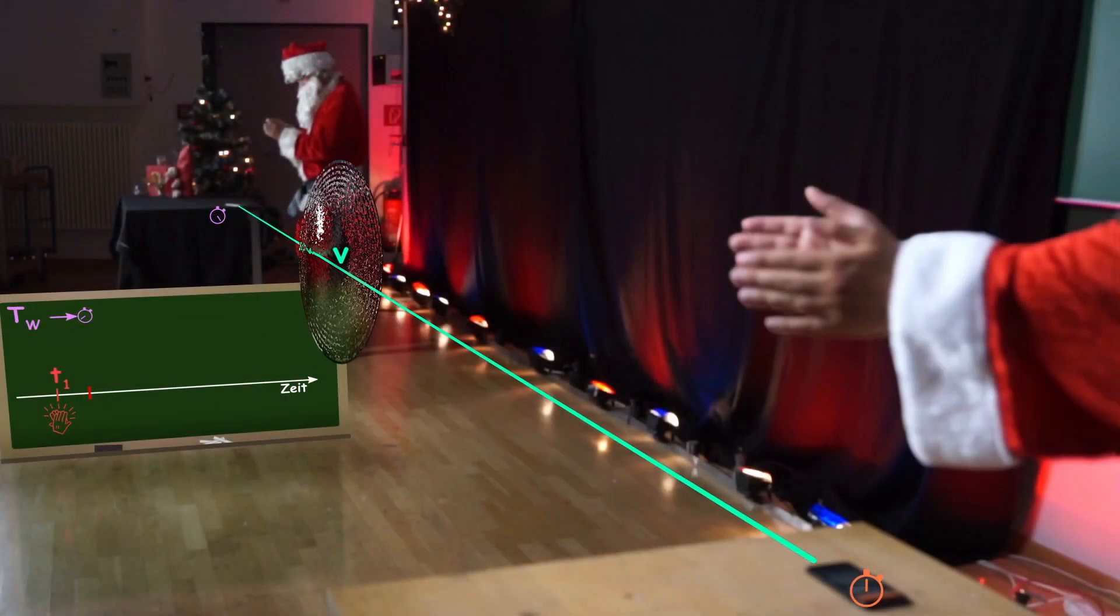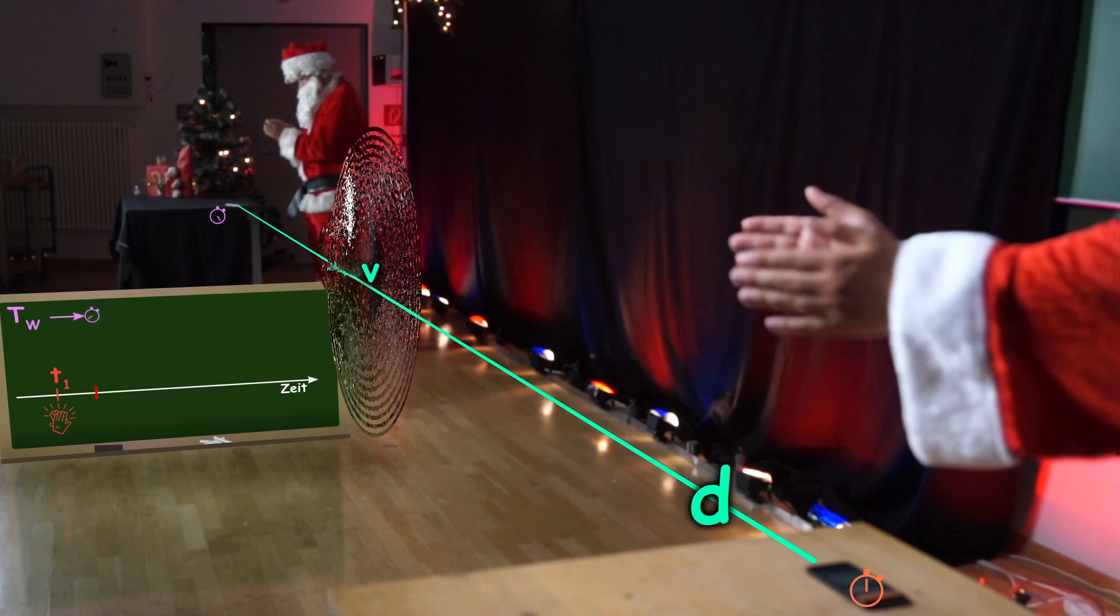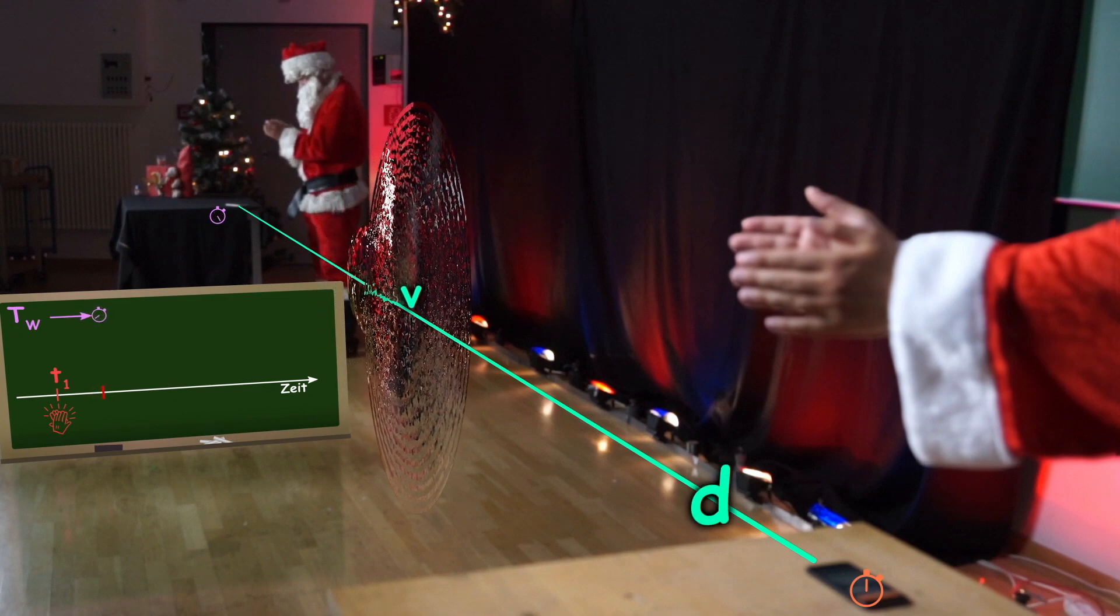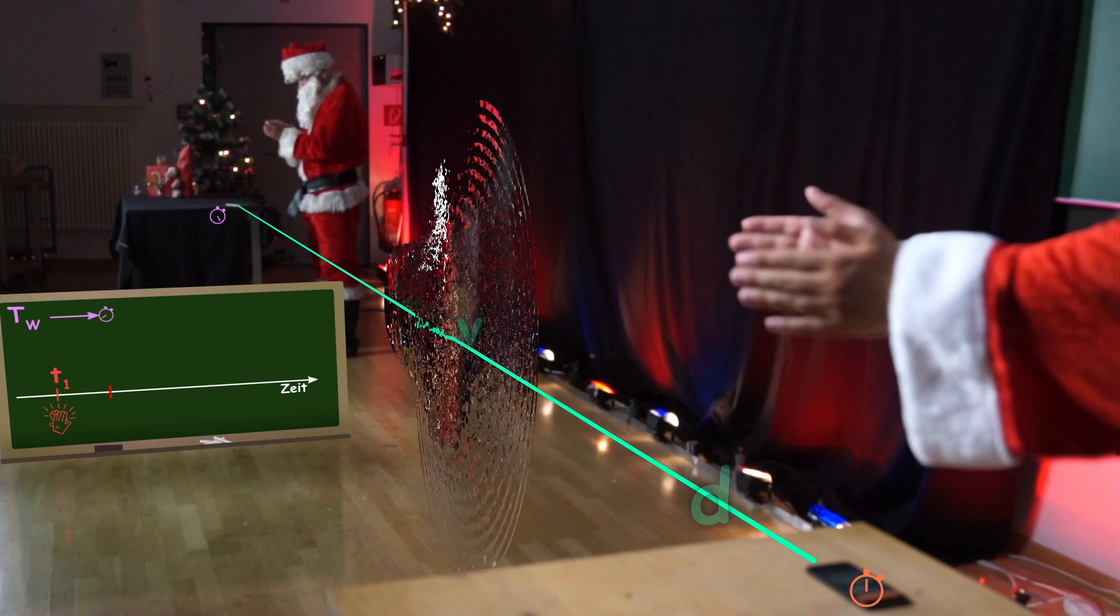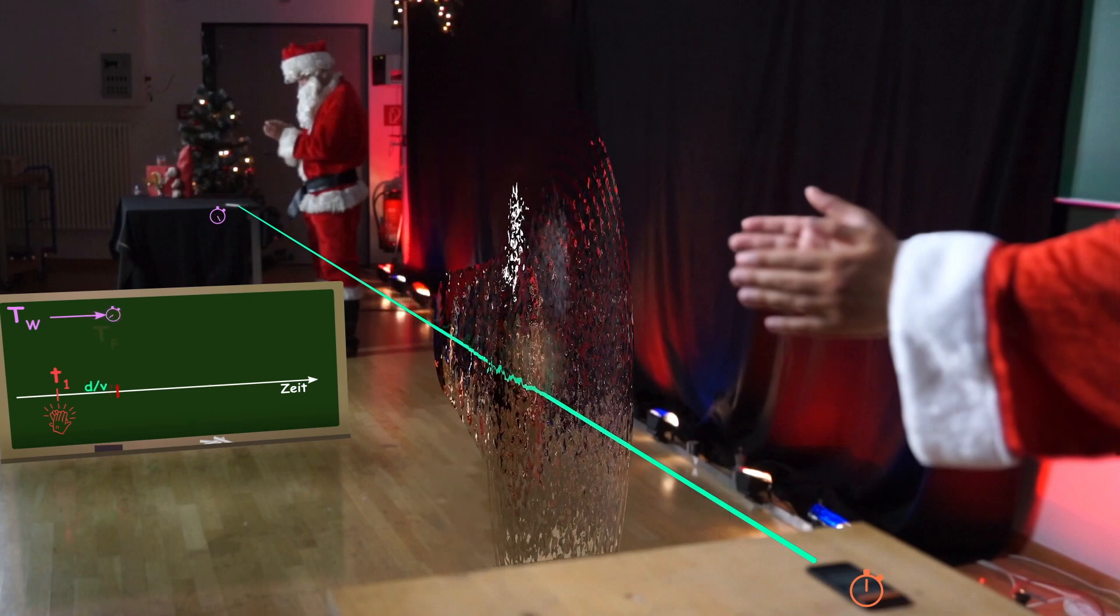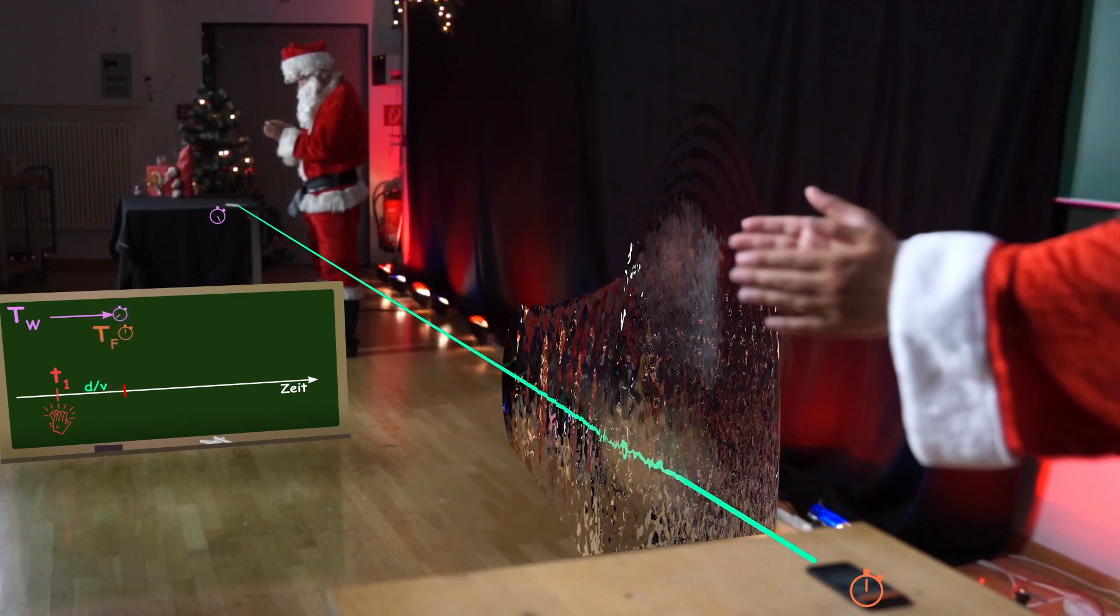The sound with speed V must first cover the distance between the two friends. For this it needs the time D divided by V. So the friend's clock does not start until T2 equals T1 plus D divided by V.